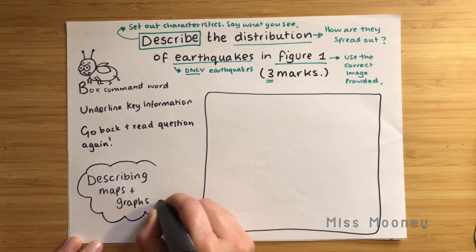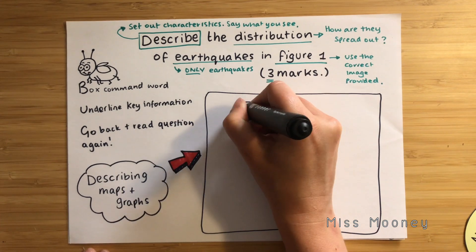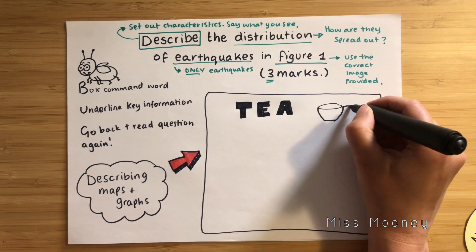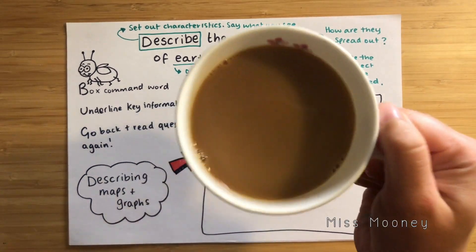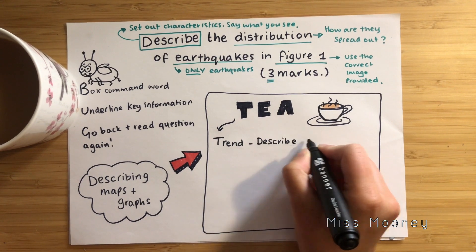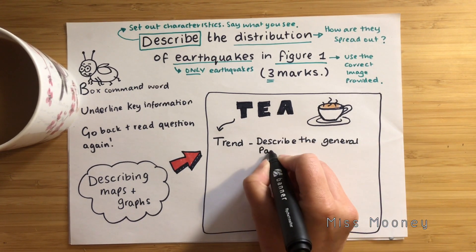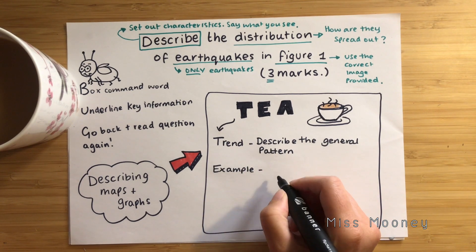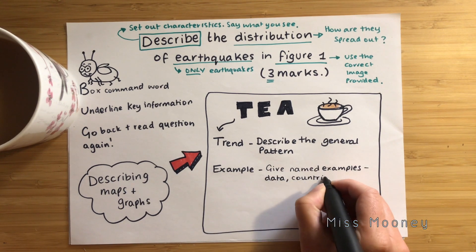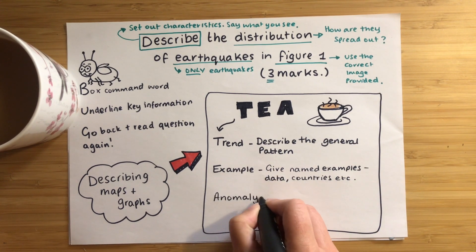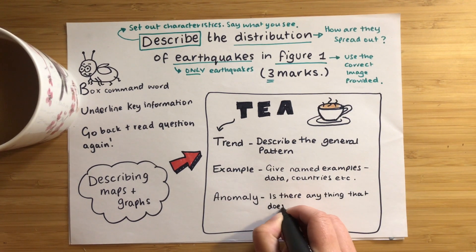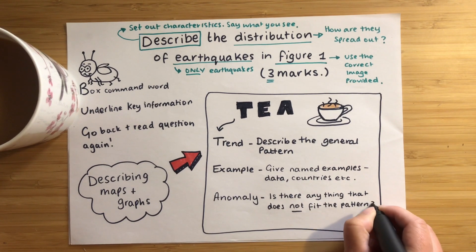To describe maps and graphs I recommend using the TEA technique, which helps you hit those marks and break down the map or graph given as a figure. T is for trend — describing the general pattern. E is for example — give named examples to support your trend; this could be countries, continents, or data. And A is for anomalies — can you spot anything that does not fit the pattern, something that stands out or looks unusual? There won't always be an anomaly but check just in case.